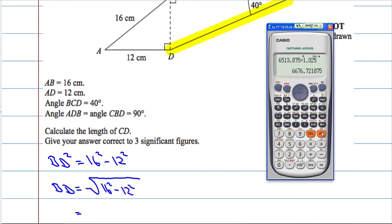Which means that BD will equal the square root of 16 squared minus 12 squared. I'm going to get my calculator to do this, and essentially when we want the short side, using Pythagoras, we square both numbers, we subtract, and then we take the square root.